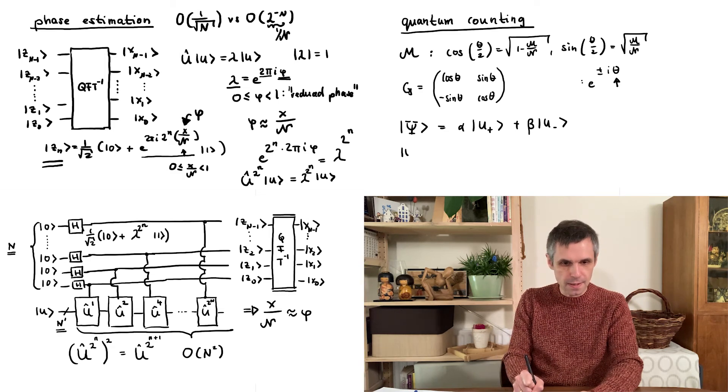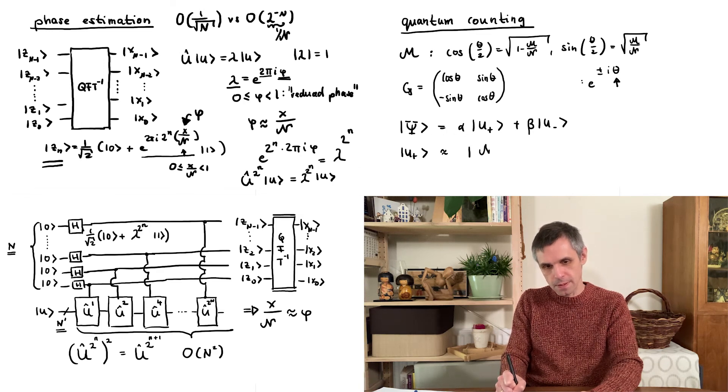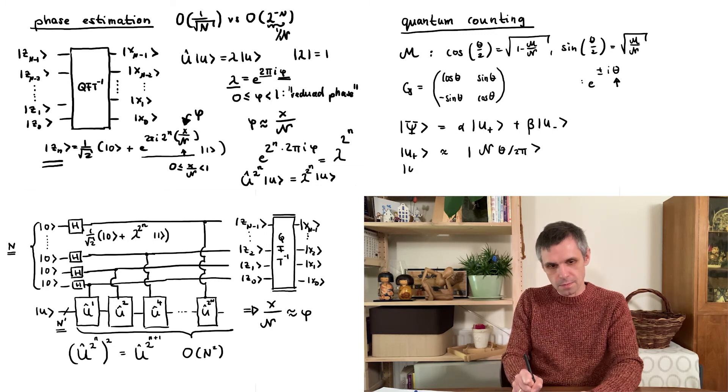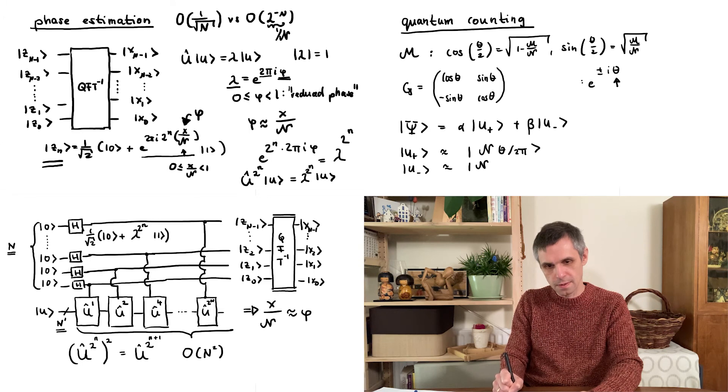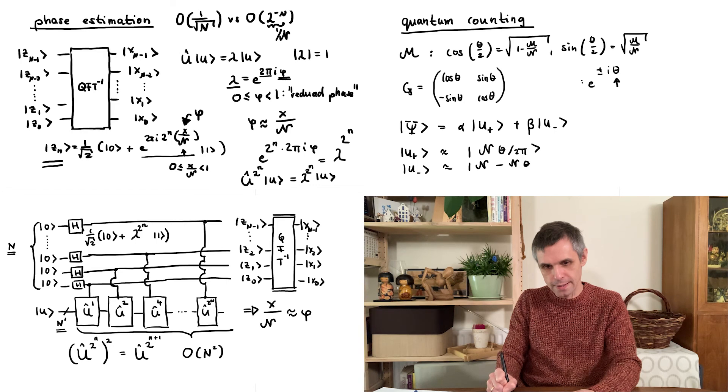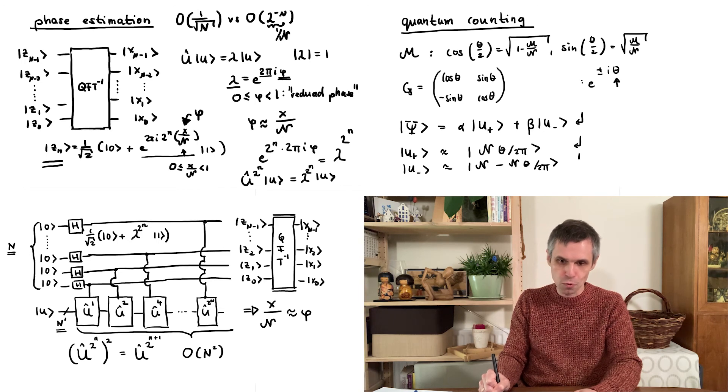When we start with the state u plus in our phase estimation algorithm, we end up with an n-bit approximation of our phase, given by this integer here. And when we start out with this value, then we essentially obtain this value here, where we basically read this all modulo curly n. And so therefore, when we start out in this superposition, we will end up in the superposition of these two states.